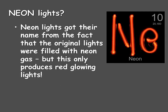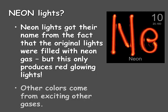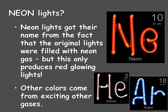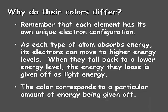Neon lights actually got their name from the fact that the original lights were filled with neon gas. But this only produces red glowing lights if you use just neon. Other colors come from exciting other gases, such as helium, shown with a pinkish-lavender hue here, and argon, which produces a blue color. But why do their colors differ? What makes them produce different colors?